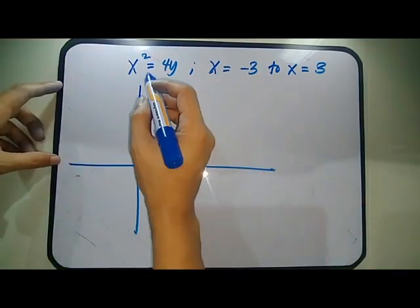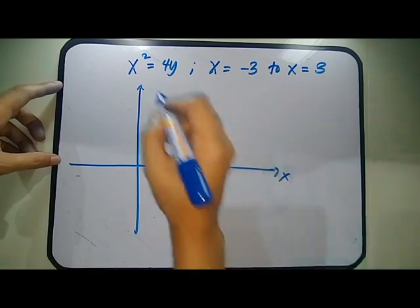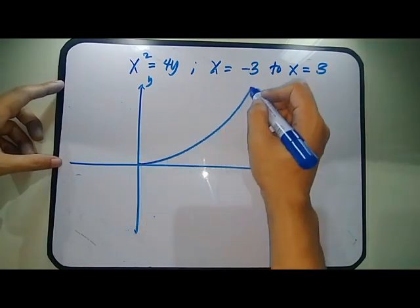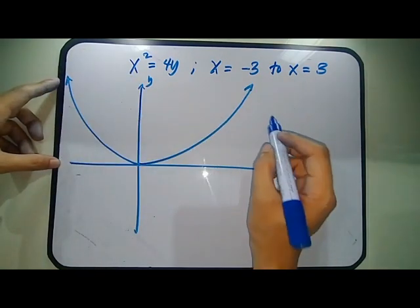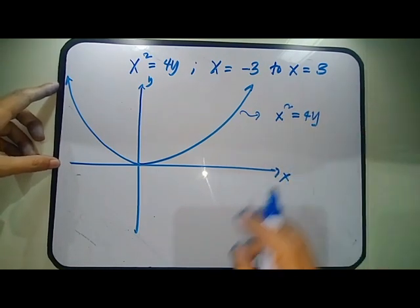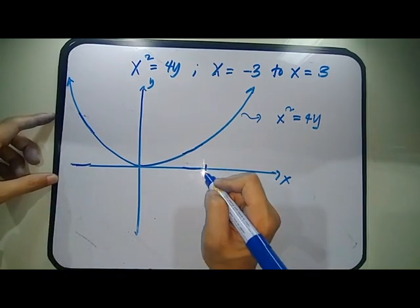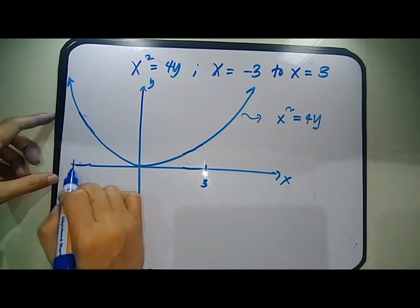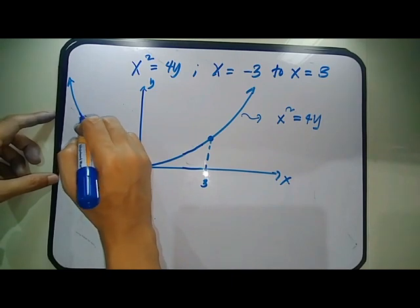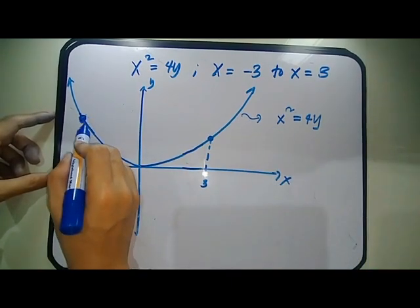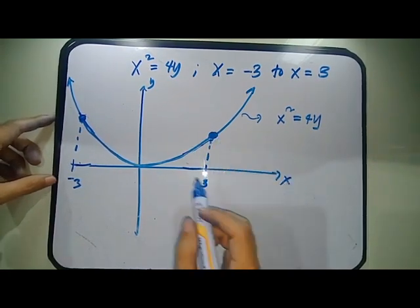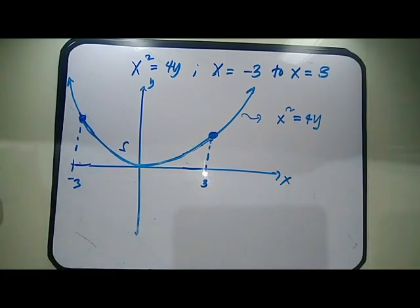Now we determine the elements for this curve: X² = 4Y. We are required to find the length of the arc from X = −3 to X = 3. First we graph the curve. Since X² = 4Y, the parabola opens upward with vertex at (0, 0). The required arc length runs from X = −3 to X = 3.